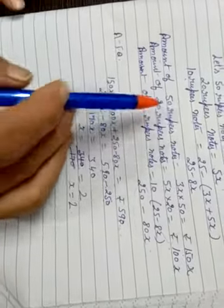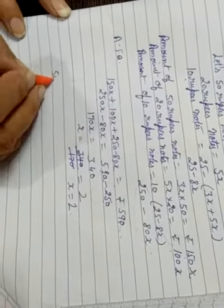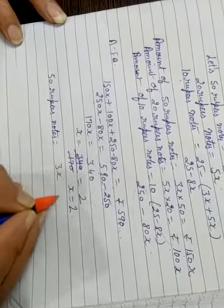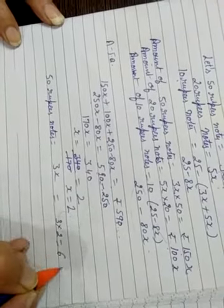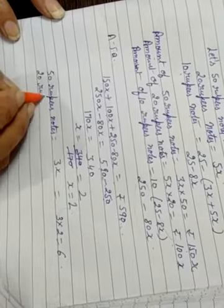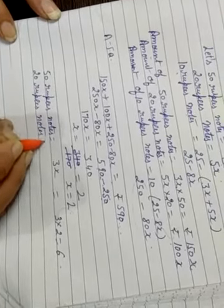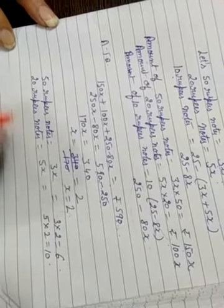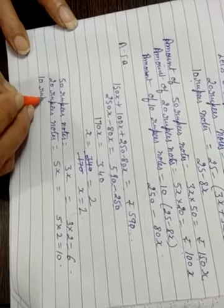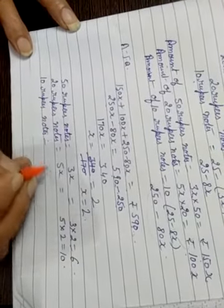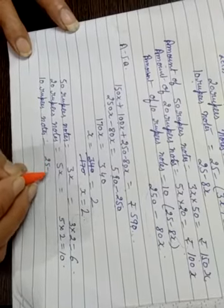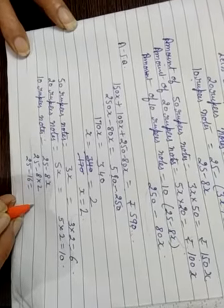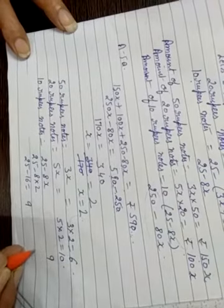Now you can find the 50 rupees notes. So, 50 rupees notes is equal to 3x, it means 3 into 2 is equal to 6. Now, 20 rupees notes is equal to 5x, it means 5 multiplied by 2 is equal to 10. Now, 10 rupees notes is equal to 25 minus 8x, 25 minus 8 into 2, 25 minus 16 is equal to 9. So 10 rupees notes are how many children? 9.